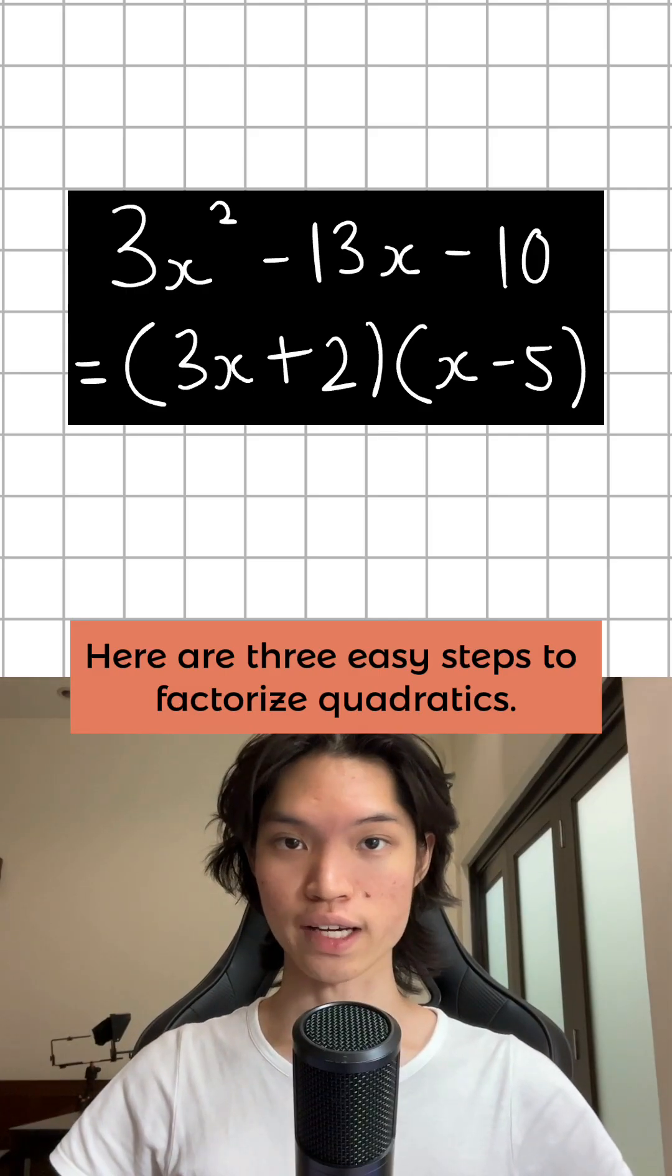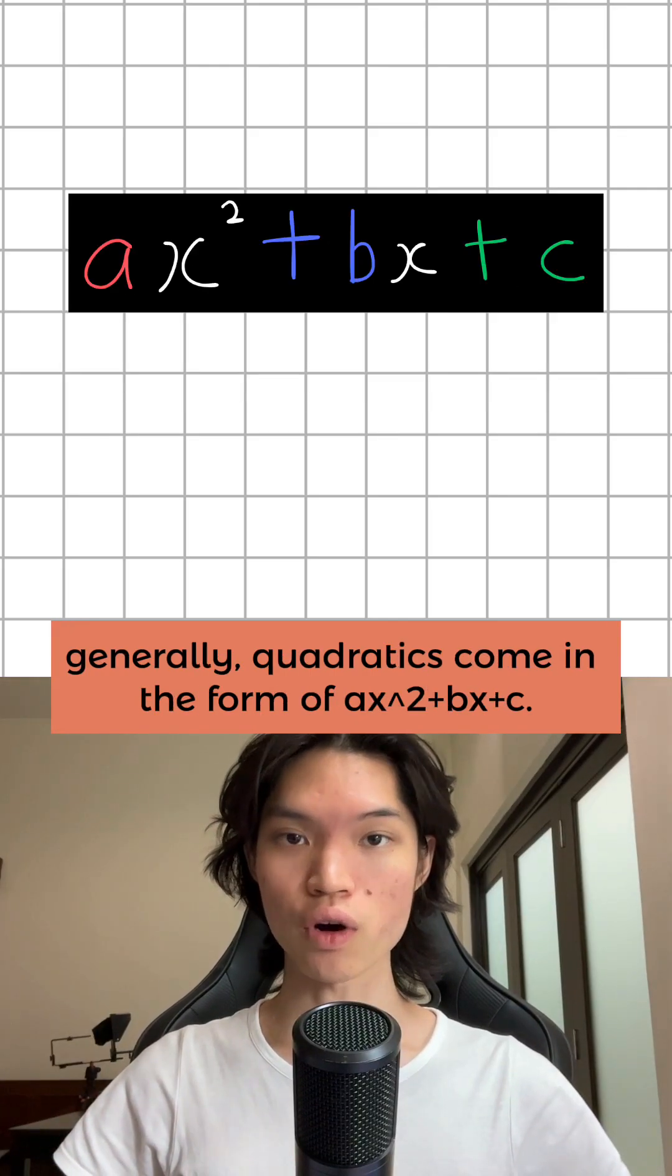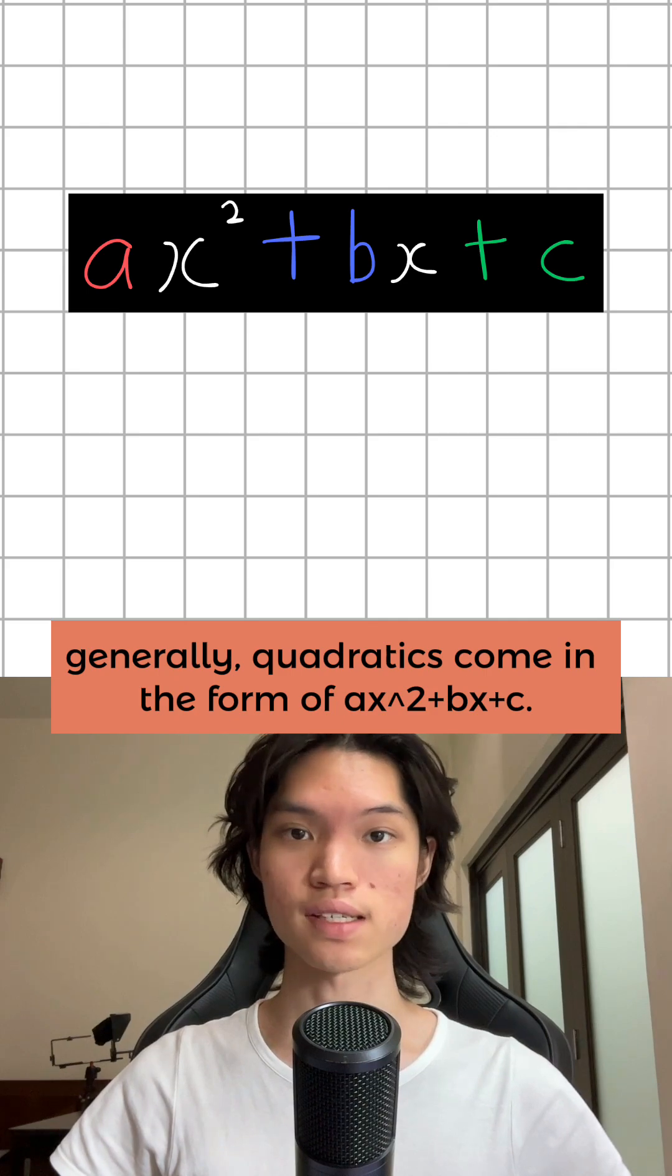Here are 3 easy steps to factorize quadratics. Generally, quadratics come in the form of ax² plus bx plus c.